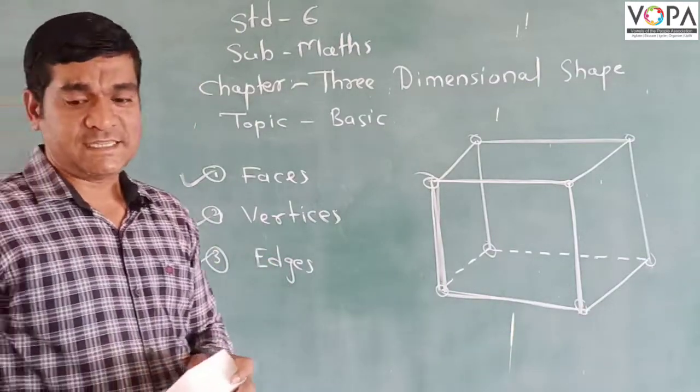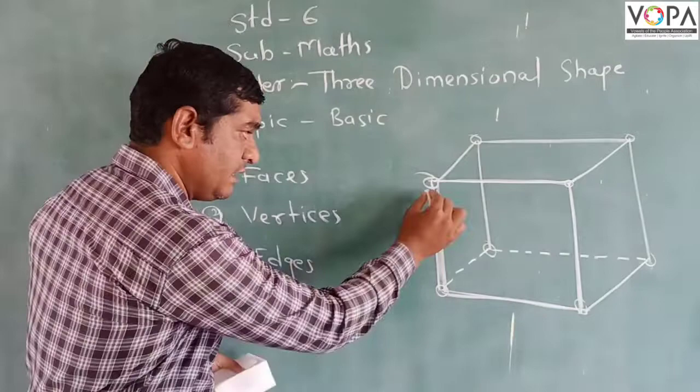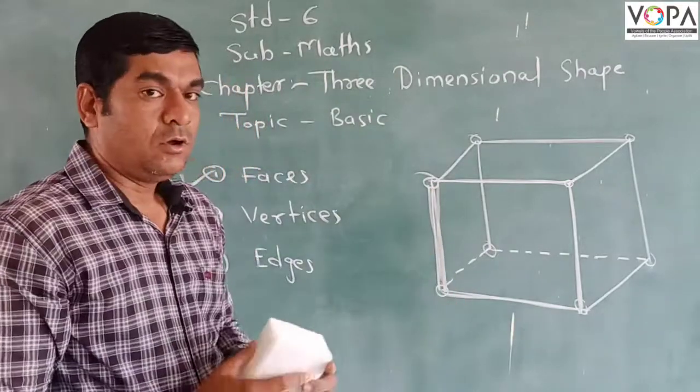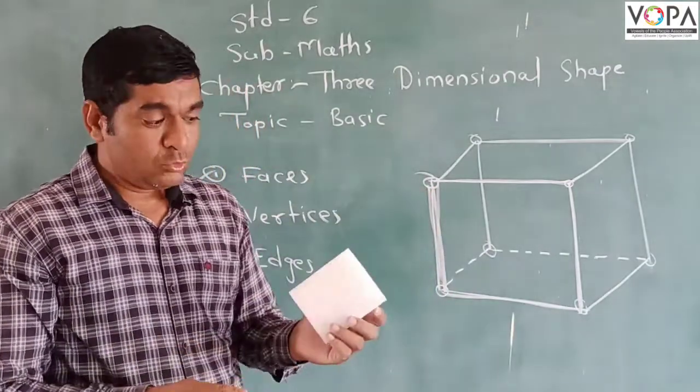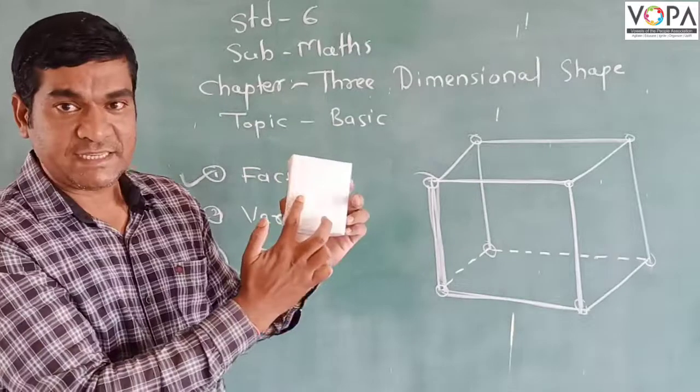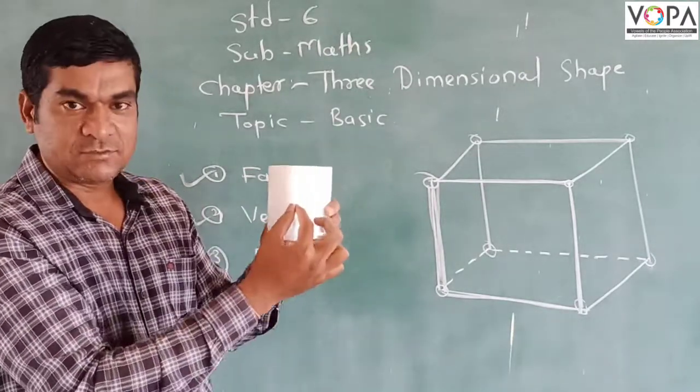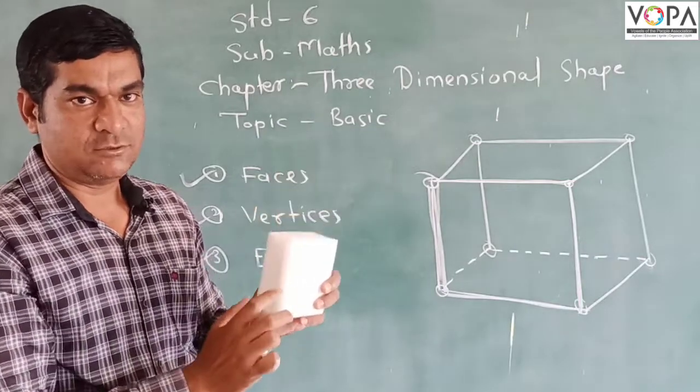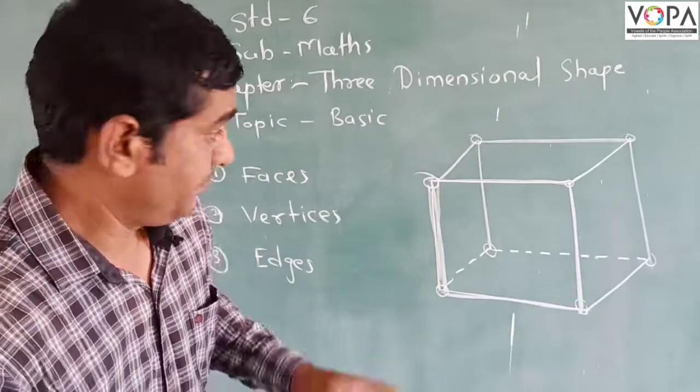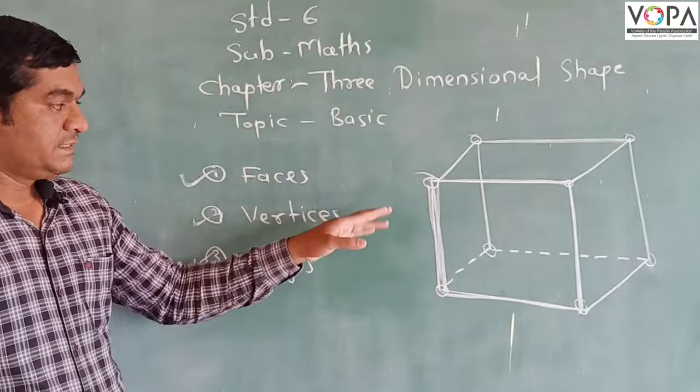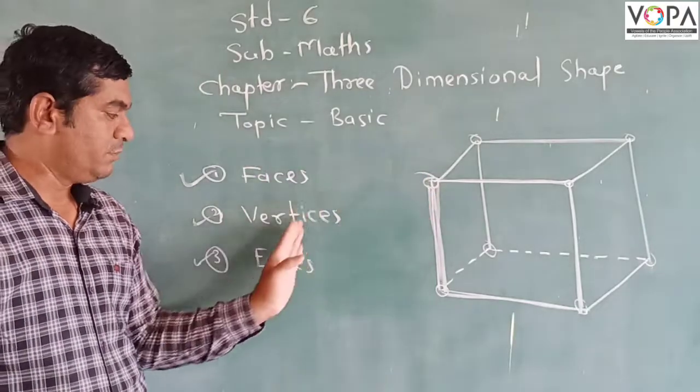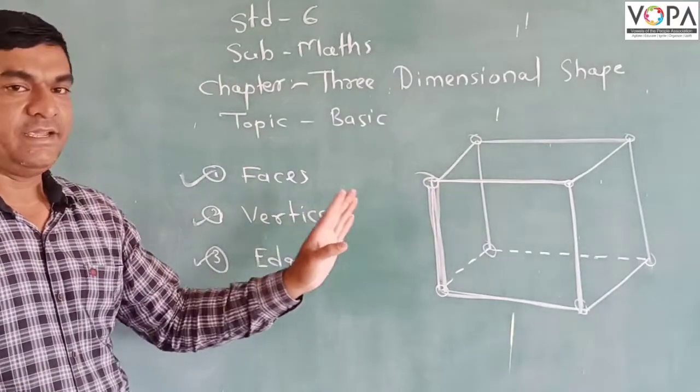What do we mean by edges? Edges means the curve shape of two faces. Two faces means this one is the face and the other face, and this is called edges. So I think we will understand by this diagram: one is the face, one is the vertices, and one is the edges.